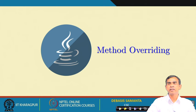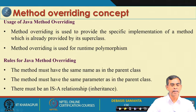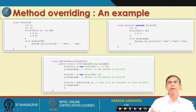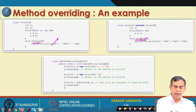Now we discuss method overriding. In the Point3D inheriting from Point2D example, the display method is defined in both classes. If we declare a method which is already defined in a superclass, the subclass method is called an overriding method — this concept is called method overriding. The method declared in the superclass can sometimes need to be redefined in the subclass.